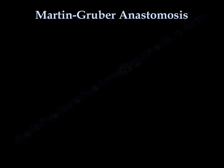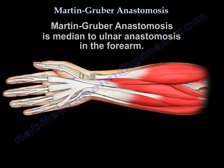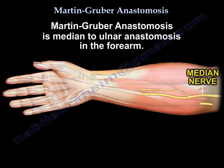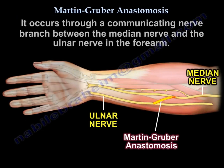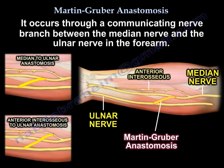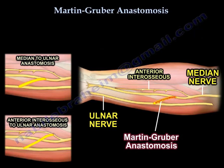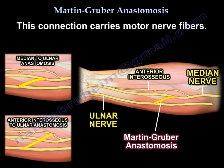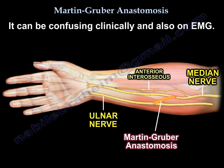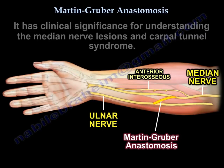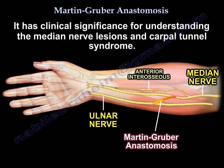Martin Gruber anastomosis is a median to ulnar anastomosis in the forearm. It occurs through a communicating nerve branch between the median nerve and ulnar nerve in the forearm. This connection carries motor nerve fibers. It can be confusing clinically and also on EMG. It has clinical significance for understanding median nerve lesions and carpal tunnel syndrome.